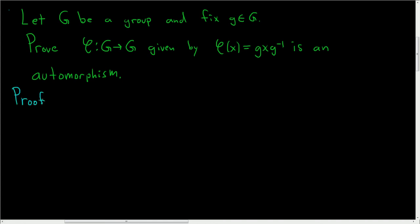Proof: Let's start by proving it is a homomorphism. Claim 1: φ is a homomorphism. So we'll take x, y in G. For all x, y in G...